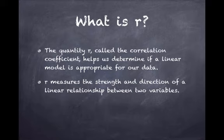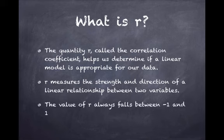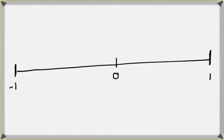r measures the strength and direction of a linear relationship between two variables, and the value of r always falls between negative 1 and 1. If we think of this as our number line that represents r, it goes from negative 1 to positive 1, with 0 in the middle.